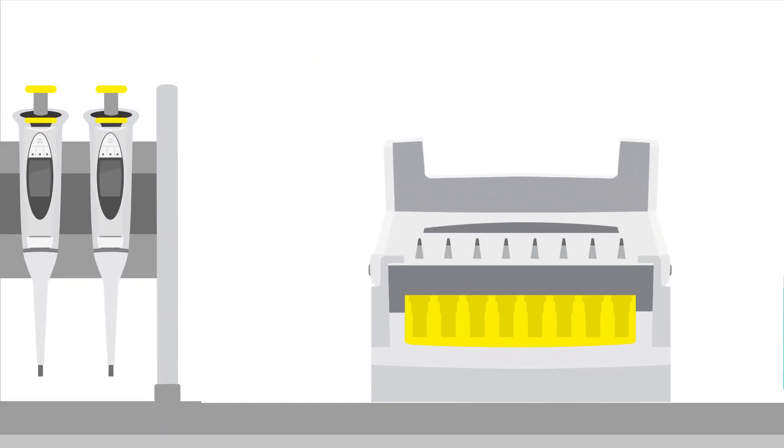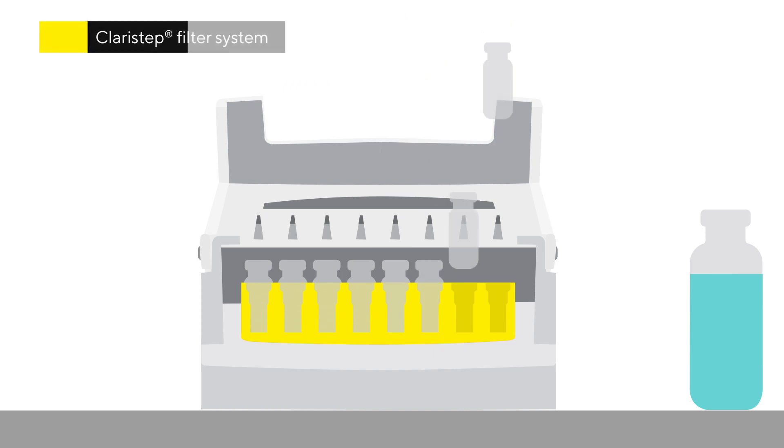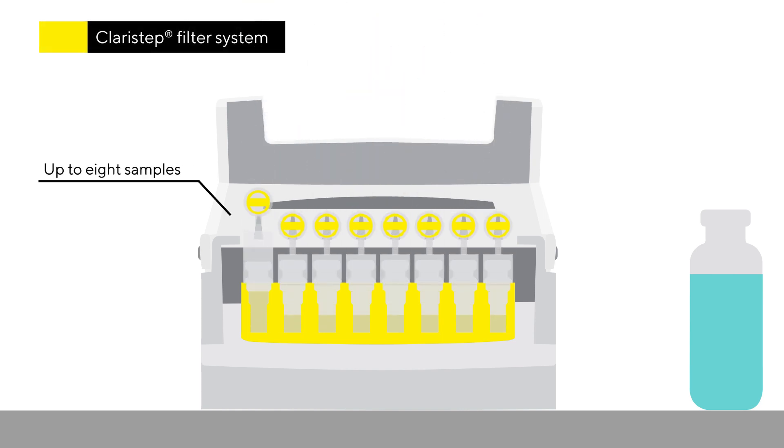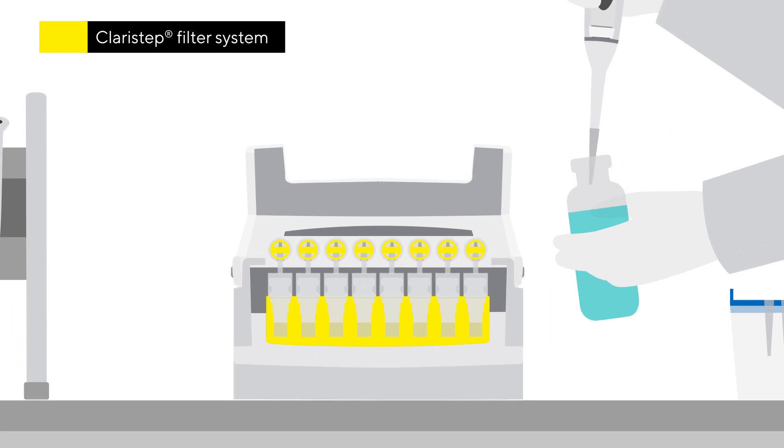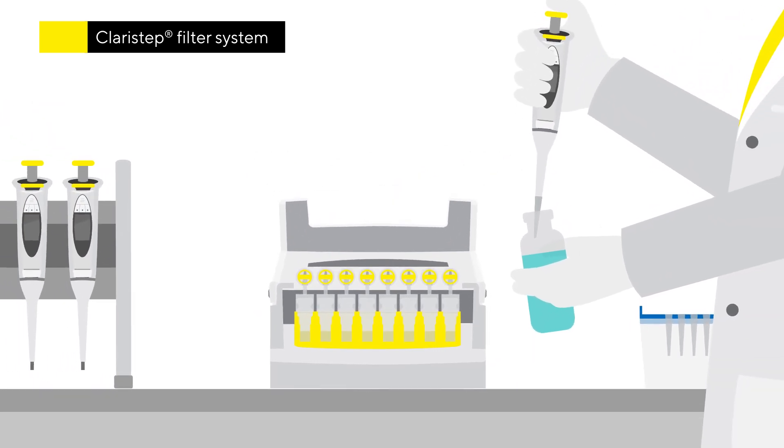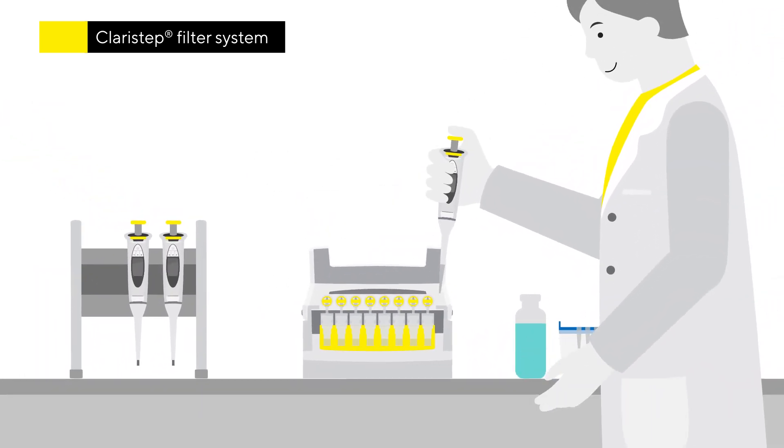And even if you have multiple samples to work with, the Klaristep filter system purifies up to 8 samples simultaneously, and is chemically stable and compatible, so you efficiently prepare 20, 30 or even 40 small volume samples, whilst maintaining precision and ensuring reproducibility.